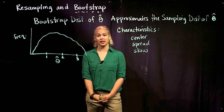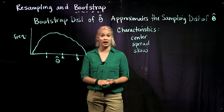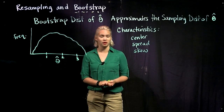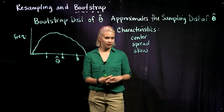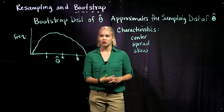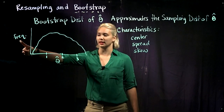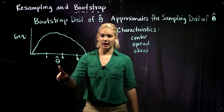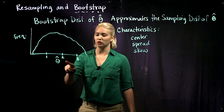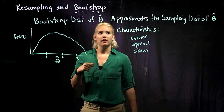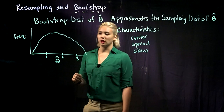Hopefully by now we've done a few examples and you can understand how we actually get this bootstrap distribution and why we want it. Remember, we want it because it approximates the sampling distribution of theta hat. So if we plot out our bootstrap distribution, maybe it looks like this — here's our histogram, with frequency on the y-axis and theta hat, our estimator, on the x-axis, with values like 1, 2, 3, and so on. So this is approximating our sampling distribution of theta hat.